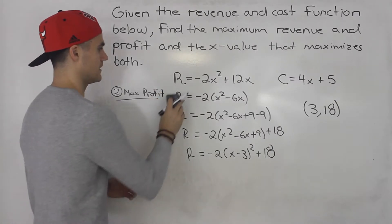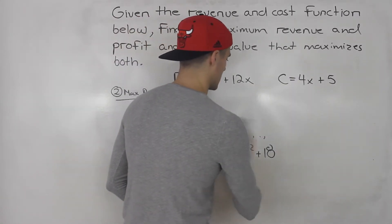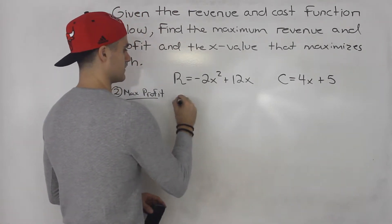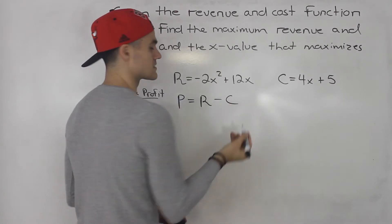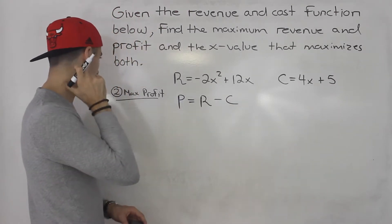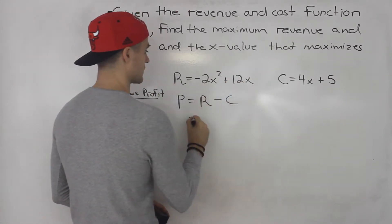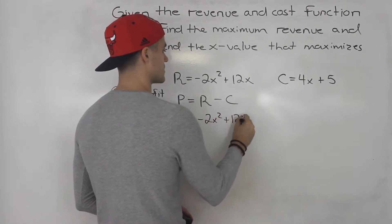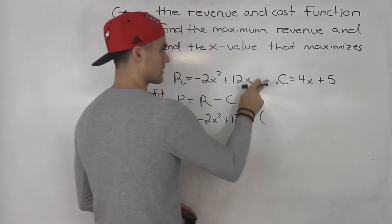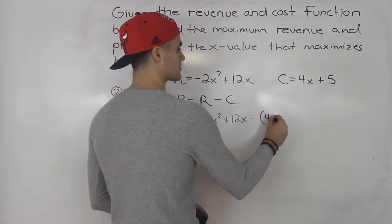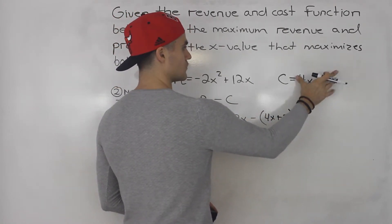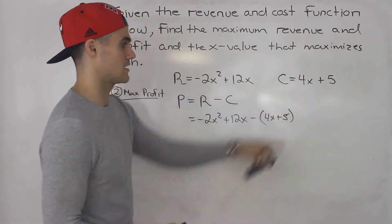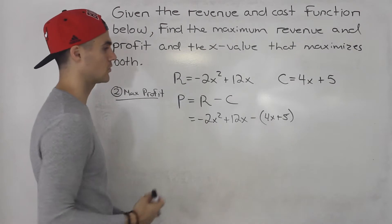Profit. Well, then it is different because profit is equal to revenue minus costs. So we have to combine these two functions. We have to take the revenue function, negative 2x squared plus 12x, and we've got to subtract the cost function, which is 4x plus 5. And you want to make sure if they give you a function for the cost, you want to subtract that whole function that has to be in brackets.